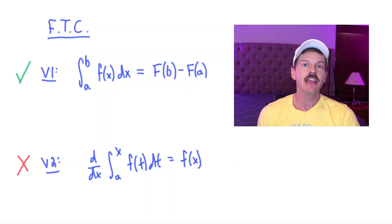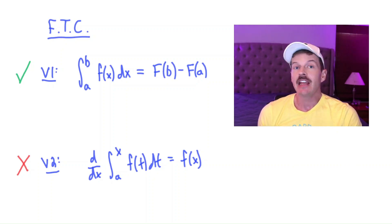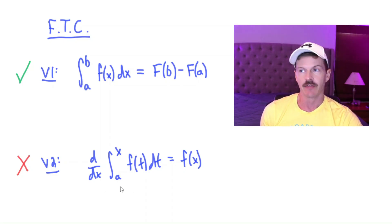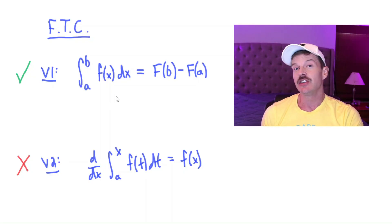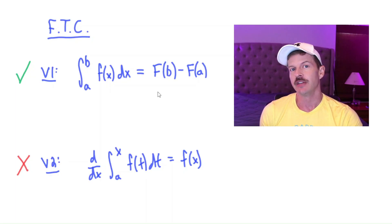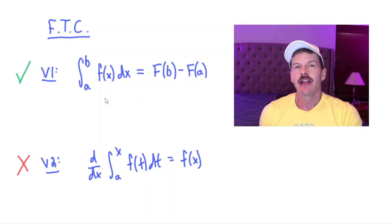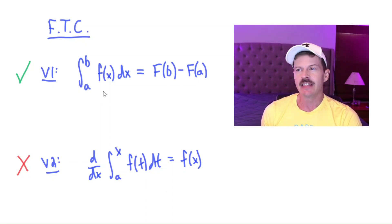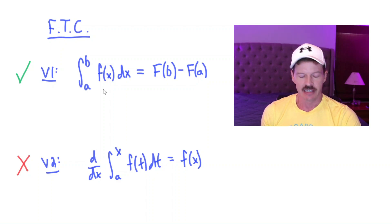In a typical calculus class, if the fundamental theorem of calculus is given any kind of explanation as to why it's true, it's almost always the version that involves a derivative of an integral. But the version we tend to use the most — the version that says you can find a certain area by doing an antiderivative — is usually only explained indirectly as a consequence. I would like to give a simple, direct explanation as to why this version is true.